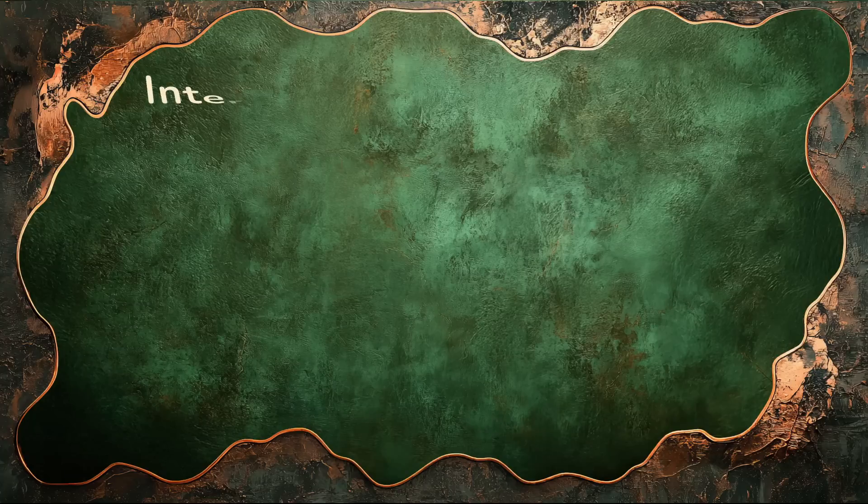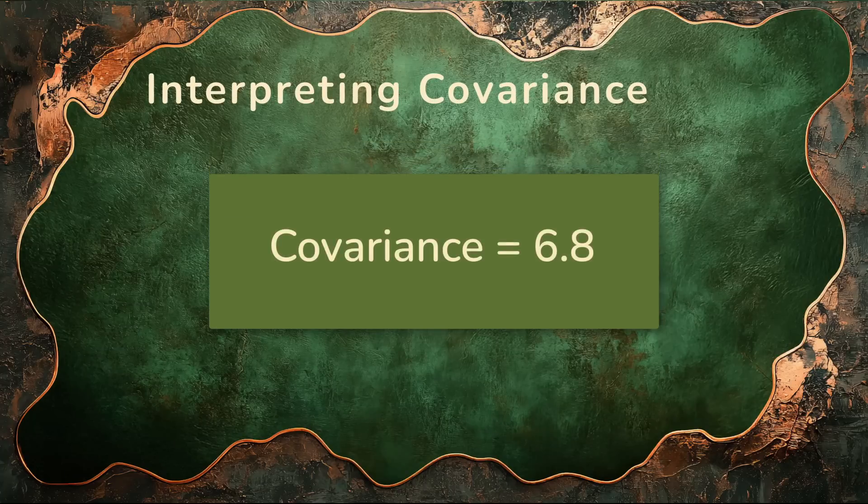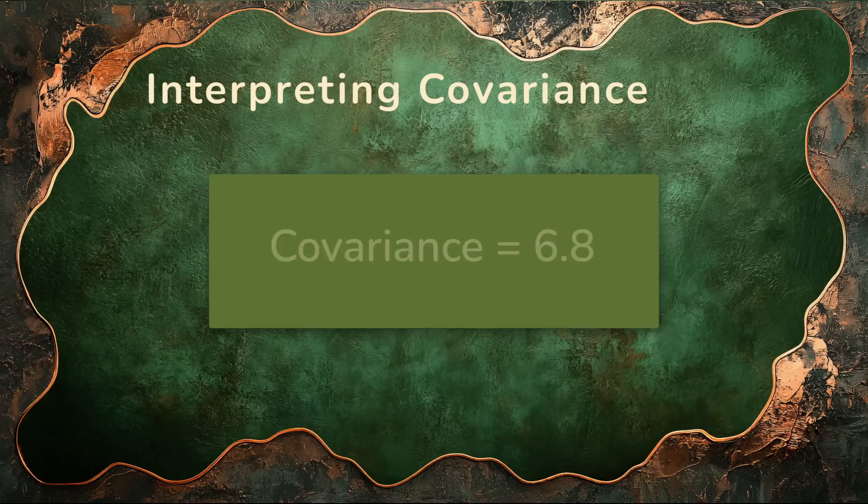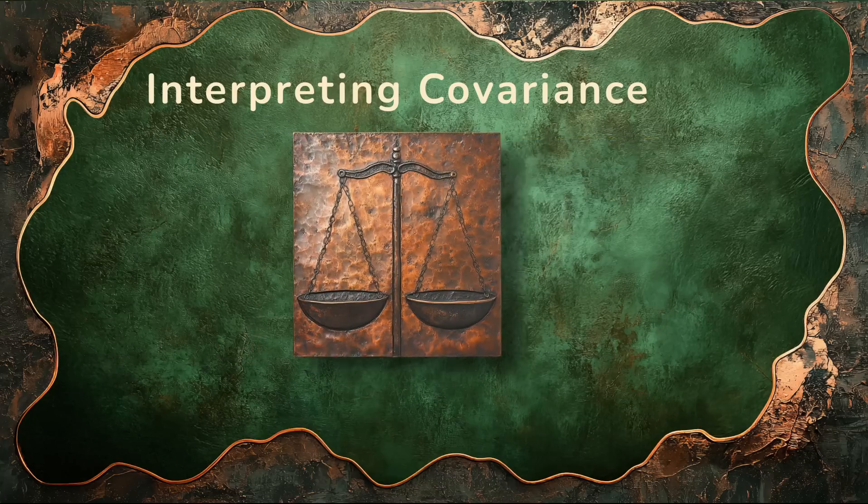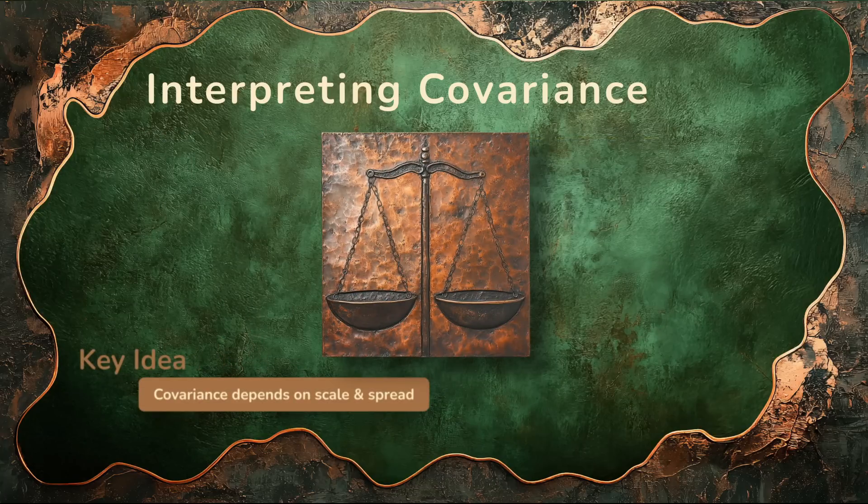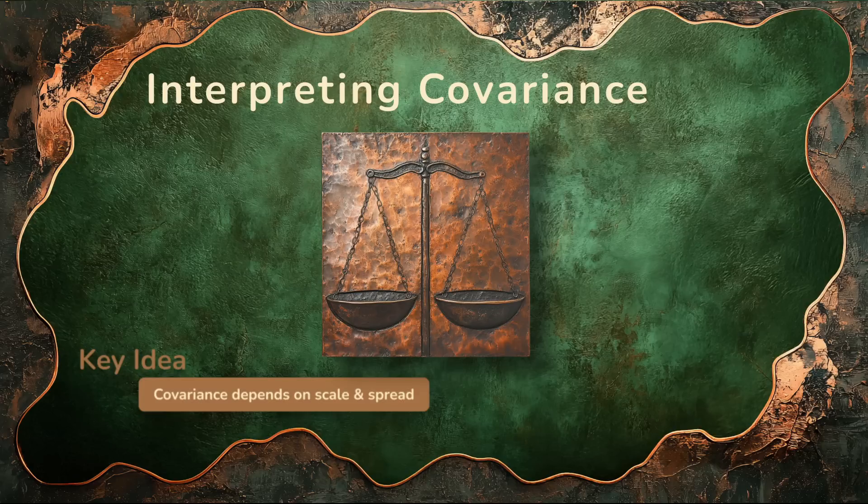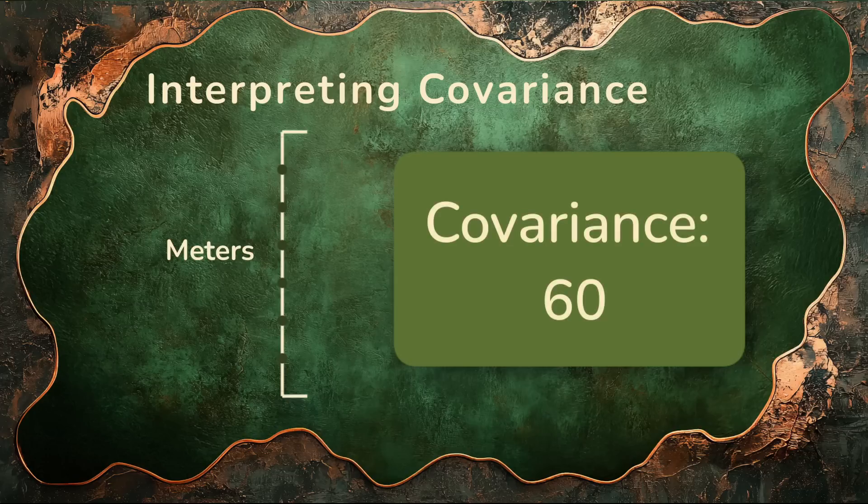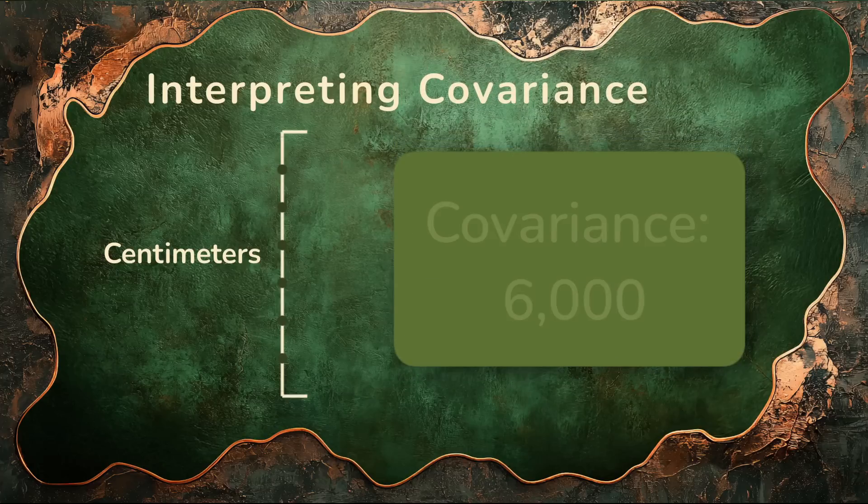Okay, so we got a covariance of 6.8. But is that big? Is it small? Is it impressive? Honestly, it's hard to say. Covariance doesn't have a built-in scale. Its size depends entirely on the units and the spread of your variables. Let's say we were tracking heights and weights. If you measured height in meters, the covariance might be 60. But switch meters to centimeters, suddenly the covariance is 6,000. Same data. Same relationship. Completely different value.